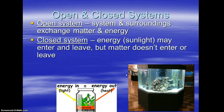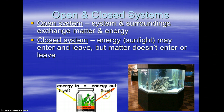Closed system is the opposite. Energy can come and go, but matter cannot enter or leave. So a closed system — I have here this life in a jar. The top is sealed. Sunlight energy can come in. Heat energy can go out. But nothing — no air, no matter — nothing will be exchanged for the time that it's closed. Therefore, that's a closed system. I'm sure you can come up with other examples.